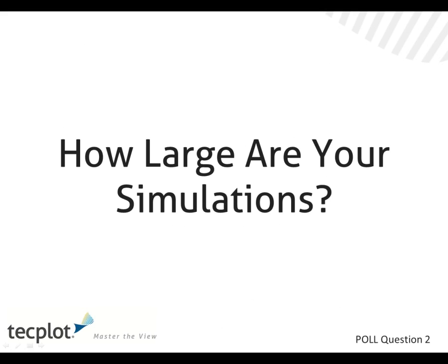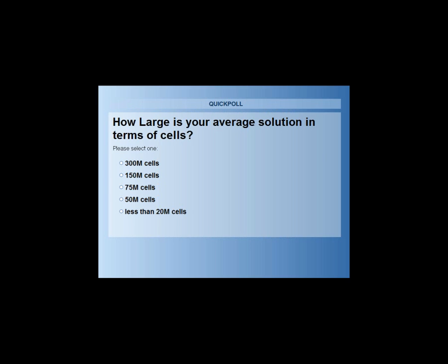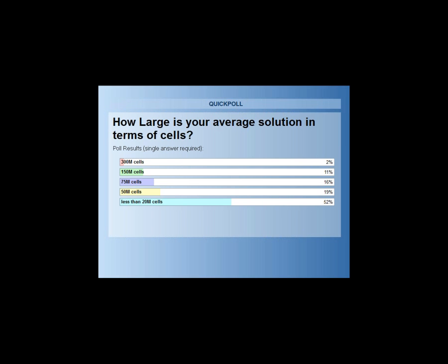In that context, we want to get a sense of how large your simulations are. The poll is open — on average, how big are your data? We've got one or two people in the 300 million cell range, but it looks like 75 to 150 million is around 57% of the folks who have voted. It really depends — and you can see the results now.